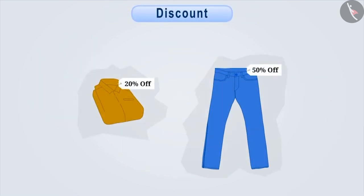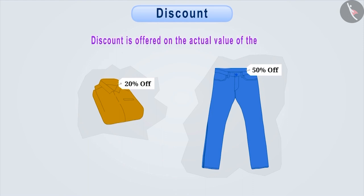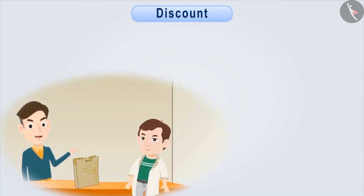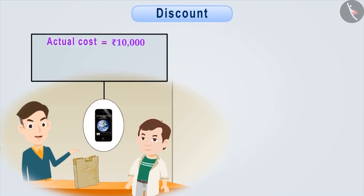Now, let us understand what discount is. To entice buyers, shopkeepers often offer some discount on the actual value of the items. You might have seen advertisements like 20% off on shirts, 50% off on jeans and many more. Mostly, this discount is offered on the actual value of the item. Suppose the actual cost of a mobile phone is Rs. 10,000. While selling it to the customer, the shopkeeper sold it for a 5% discount. Find the selling price of the mobile phone.